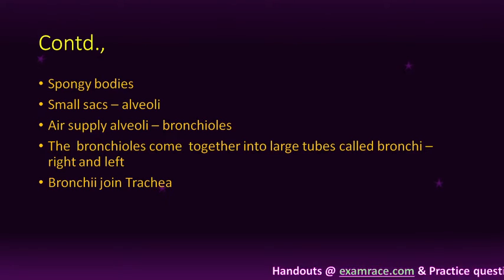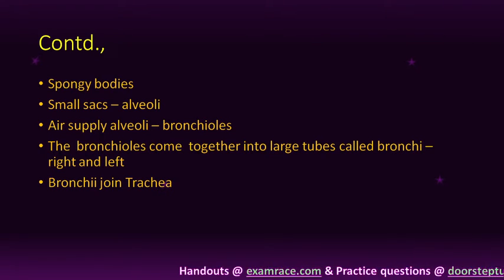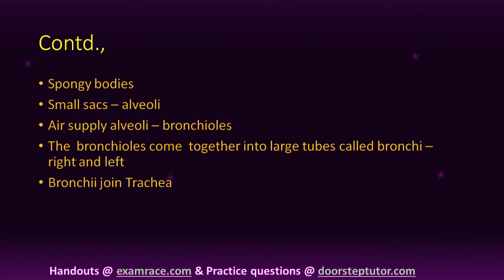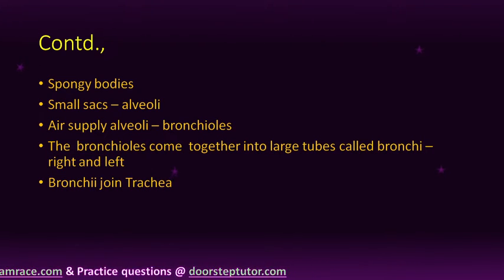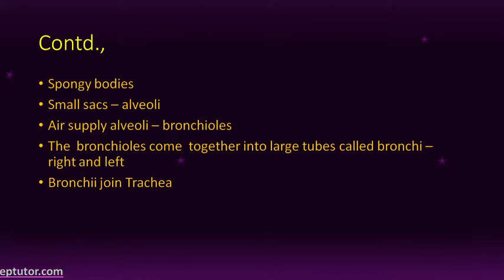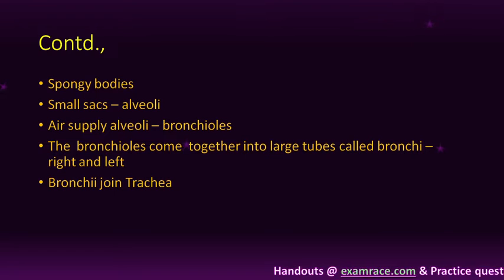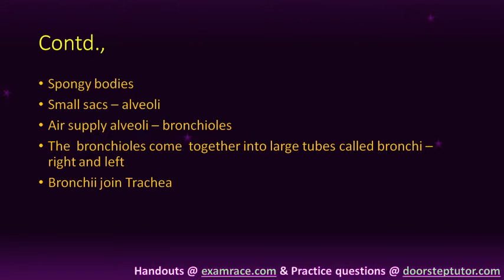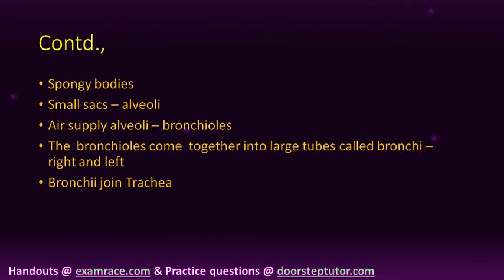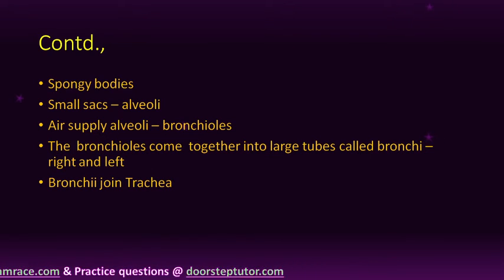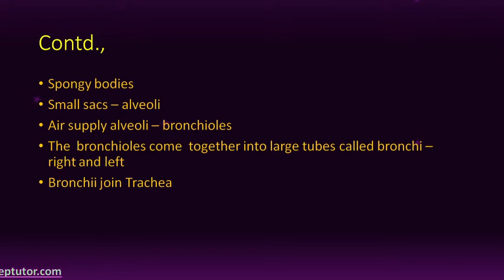Air is supplied to the Alveoli by the smaller tubes called Bronchioles. The Bronchioles come together into two large tubes called Bronchi — one situated on the right and the other on the left. The Bronchi join the Trachea, also known as Windpipe. It is through the Trachea that the air we breathe in passes through the throat and into the lungs. This act is commonly known as respiration.